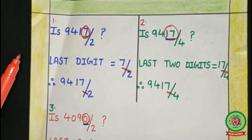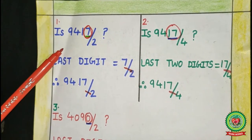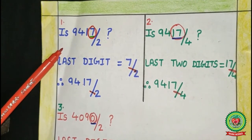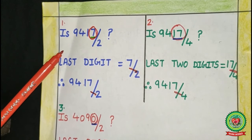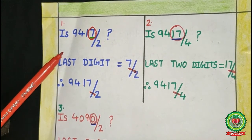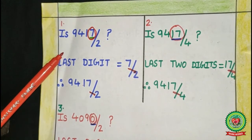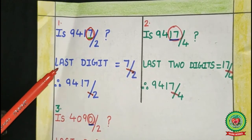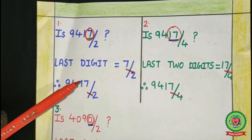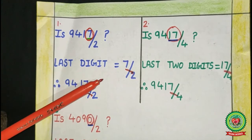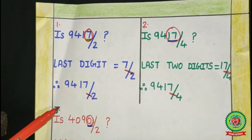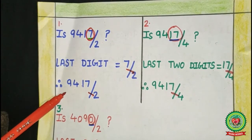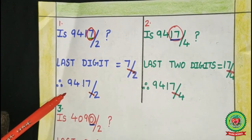Is 9,417 divisible by 2? The divisibility rule of 2 is: the last digit should be divisible by 2. The last digit is 7, and 7 is not divisible by 2. Therefore, the number 9,417 is not divisible by 2.